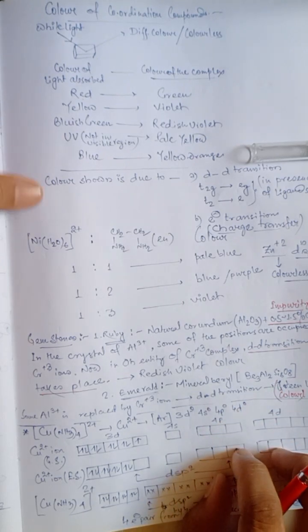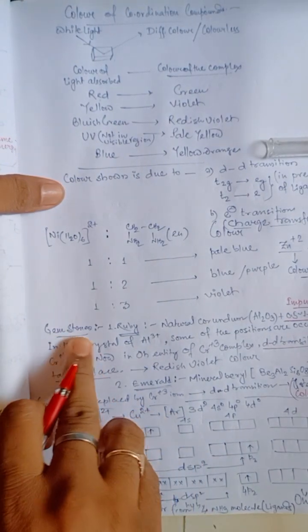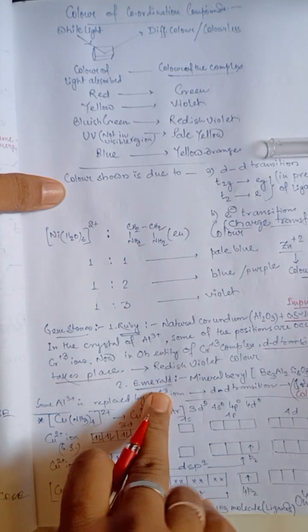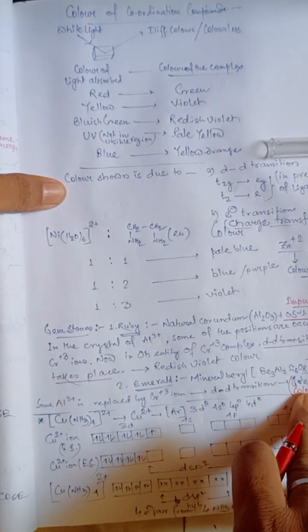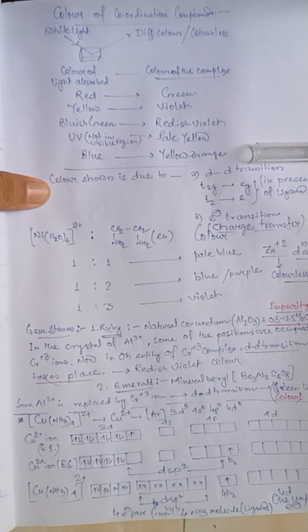So, here, we are discussing about gemstones and their color. Ruby is red is violet colored and emerald is green colored. Due to this DD transition incident.